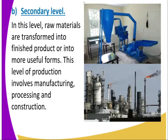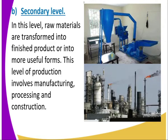For example, we get maize from the farm — that is the primary level. We take it to the mill where it is ground and we get flour. Then we process it, take it to the factory where processing takes place, and we are able to get a cake or bread. That is manufacturing.